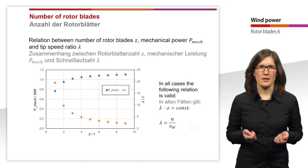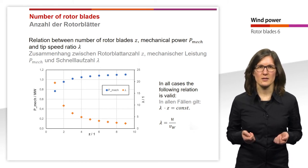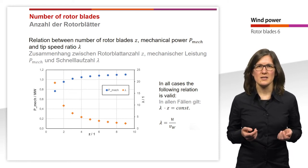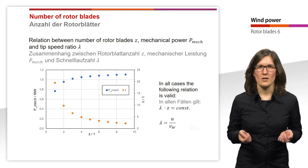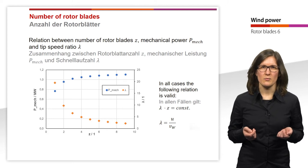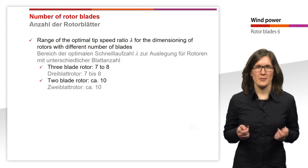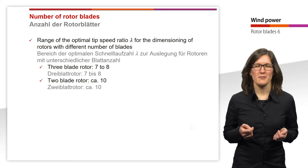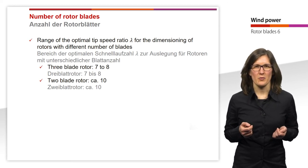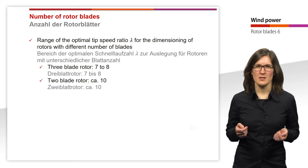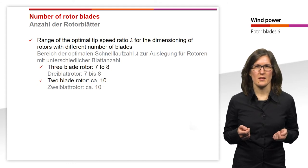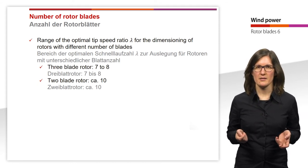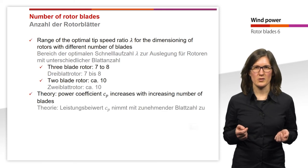Regarding the mechanical power, an enhancement from 1 to 2 rotor blades leads to a higher increase in mechanical power than an enhancement from 2 to 3 or 3 to 4 rotor blades. The range of the optimal tip speed ratio lambda for dimensioning rotors differs with the number of blades: for 3-blade rotors it is between 7 and 8, and for 2-blade rotors it is approximately 10.